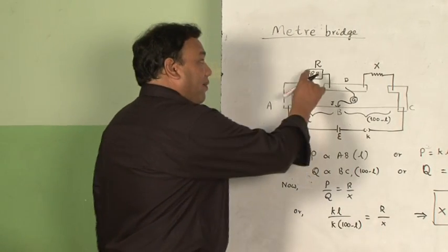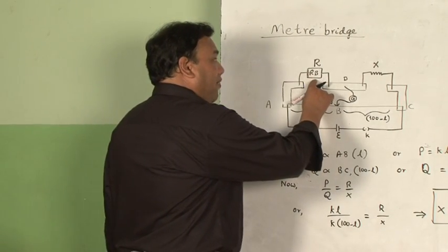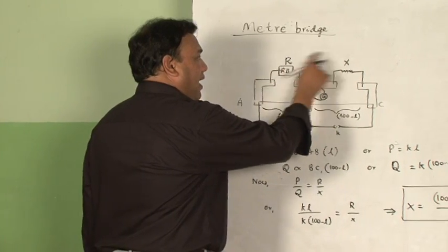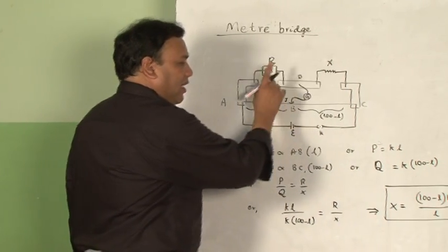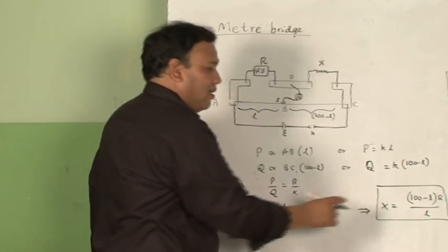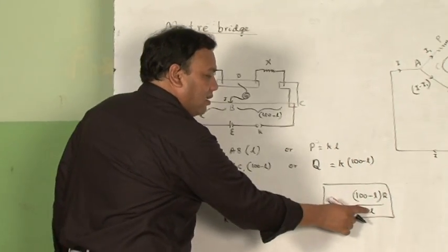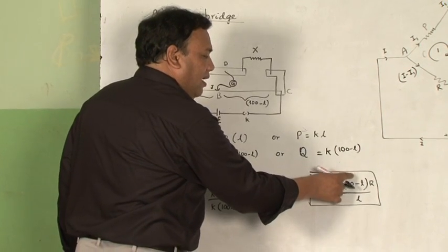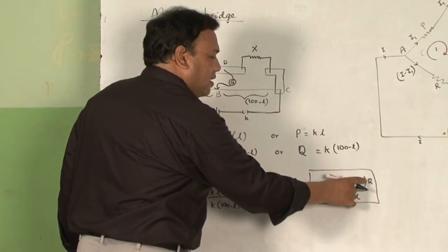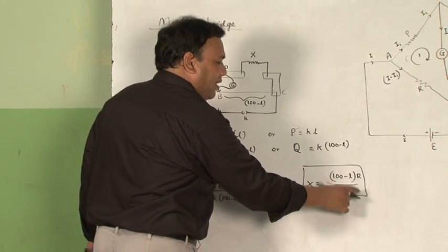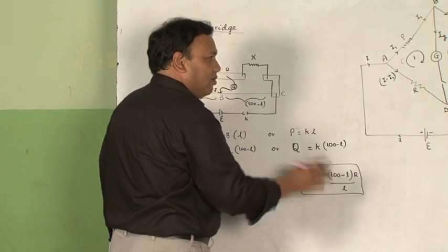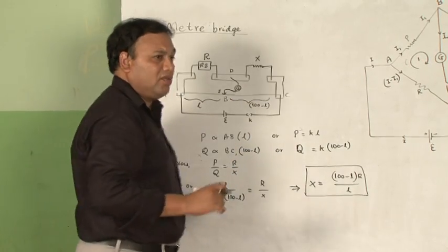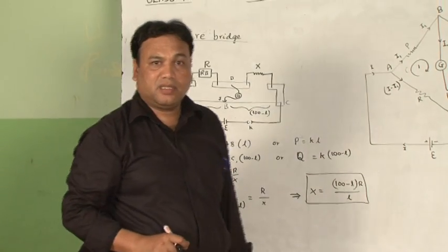If I interchange R and X, then L comes in the numerator and (100 minus L) comes in the denominator. By interchanging, you can do the experiment that way as well.